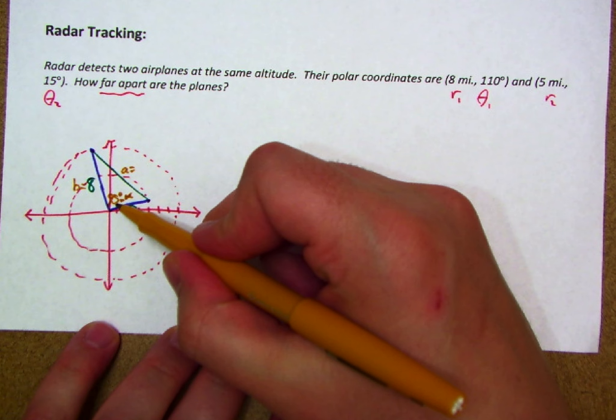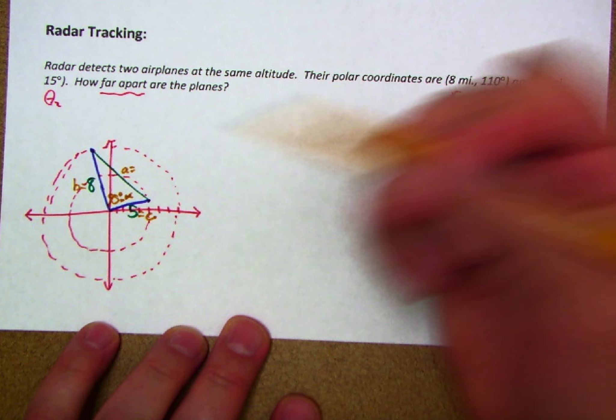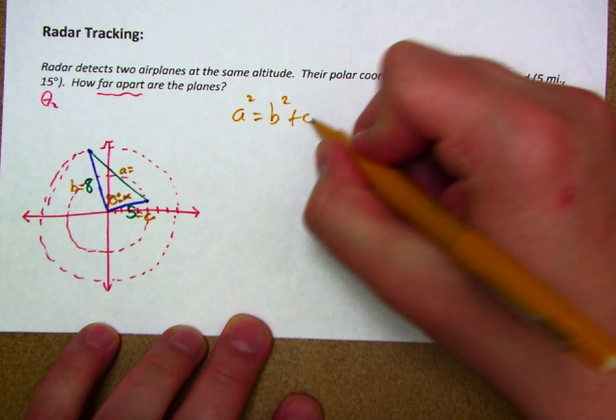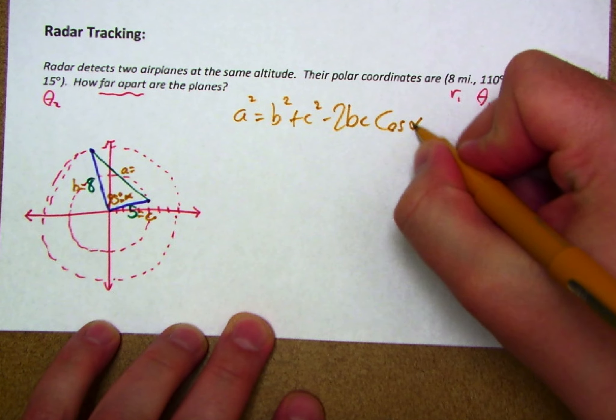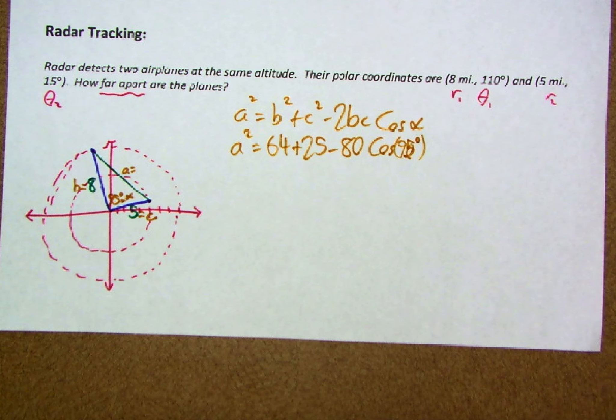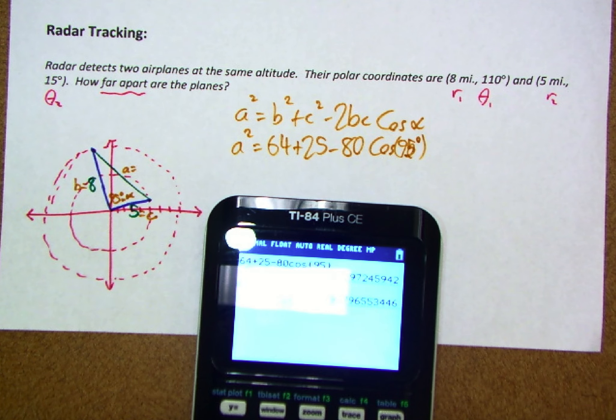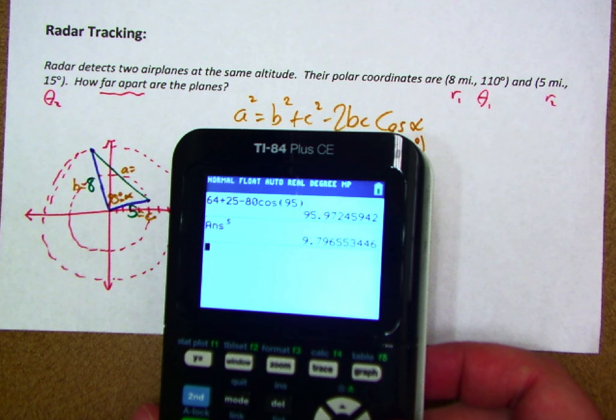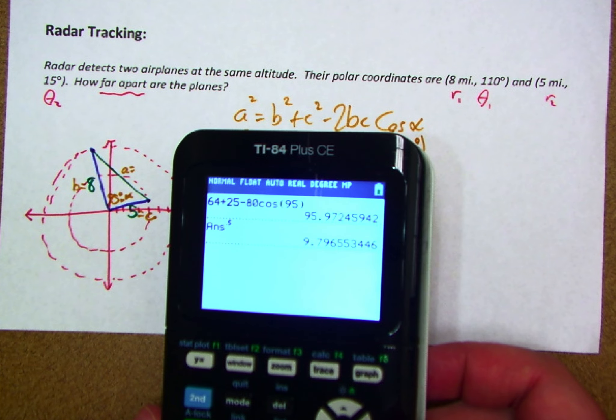Given that we have an angle and the sides that include it, we can set up the law of cosines here. And now replacing those, we're going to get A squared is equal to 64 plus 25 minus 2 times 8 times 5, which is minus 80 times cosine of alpha, which is 95 degrees. Before you run through the actual work here, just make sure that you are working in degrees. If you leave it in radians from the work above, you'll run into some problems.